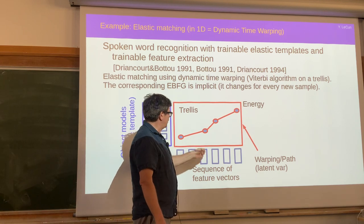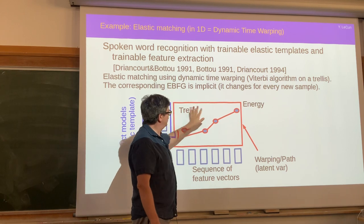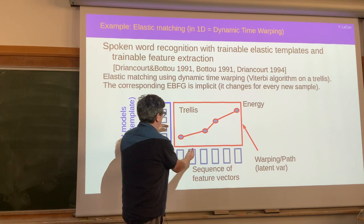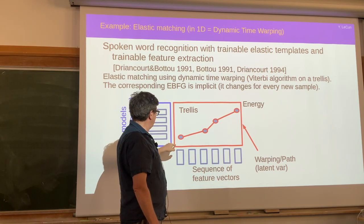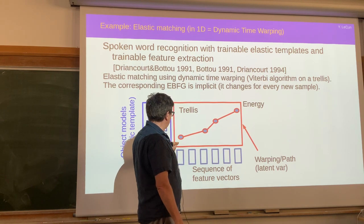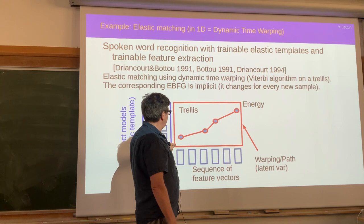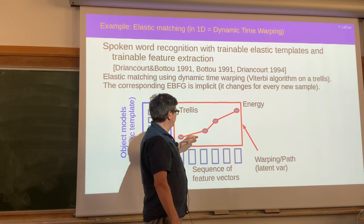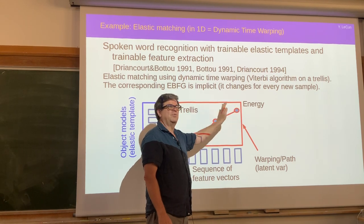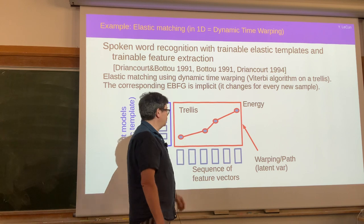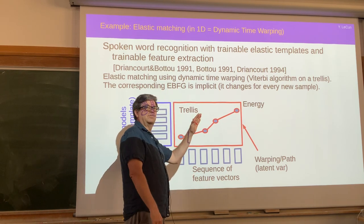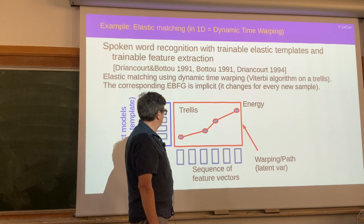You build a matrix where every crossing is the distance between two corresponding vectors. Then you ask: how can I go from one corner to the other corner, moving diagonally, right, or up, such that the sum of distances along the path is minimized? You can do this with a shortest path algorithm — dynamic programming is very efficient. It's the minimization of a latent variable, where the latent variable is the path — the warping function between the two sequences.